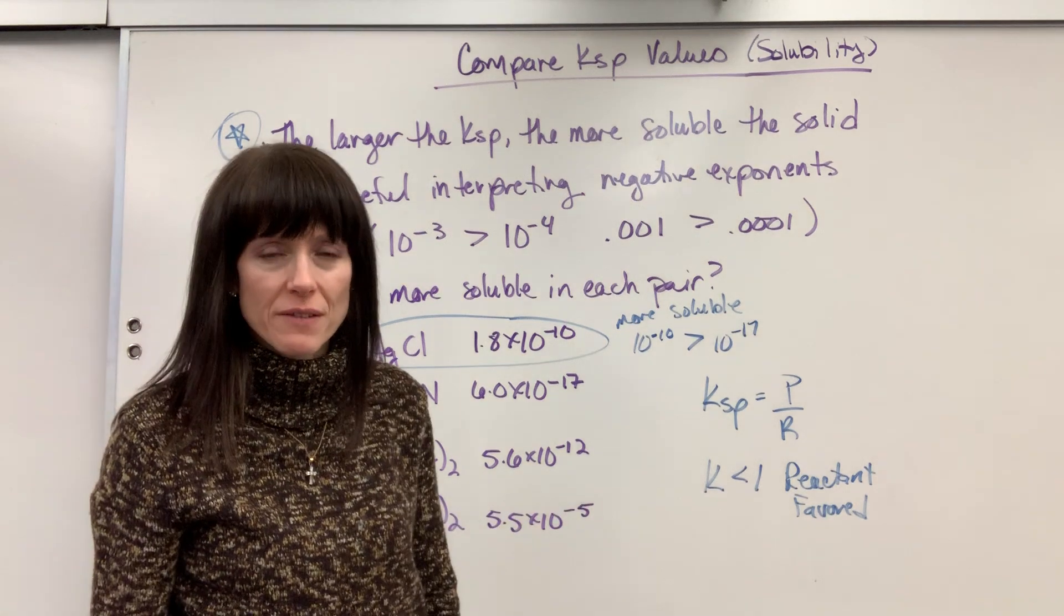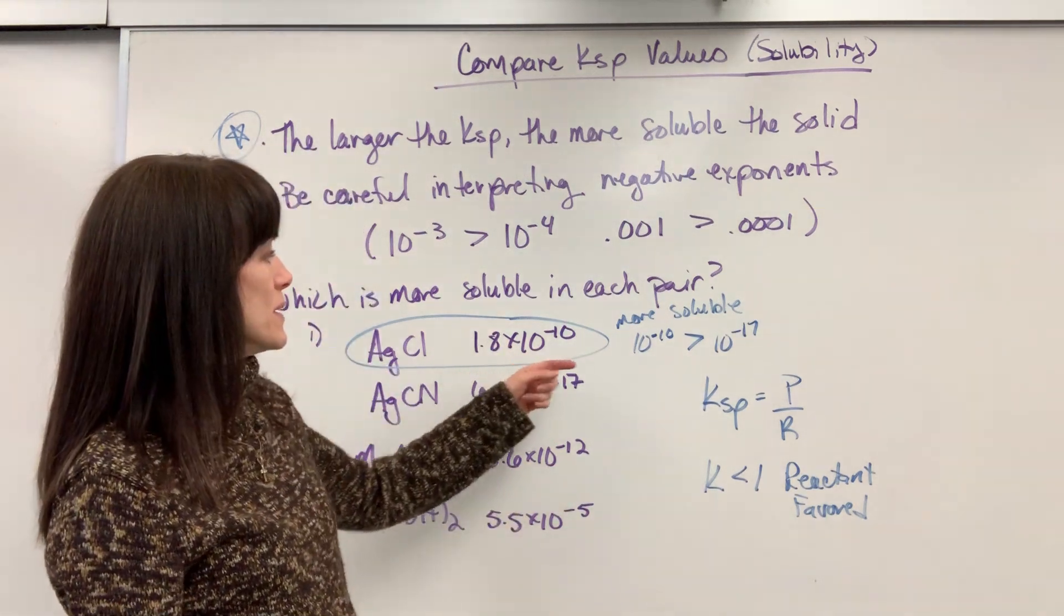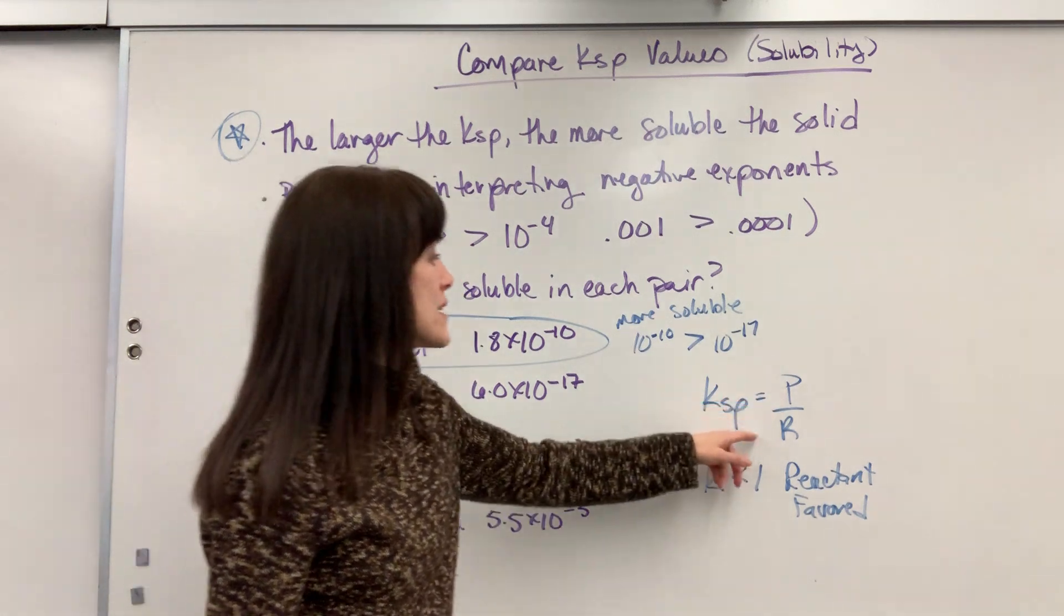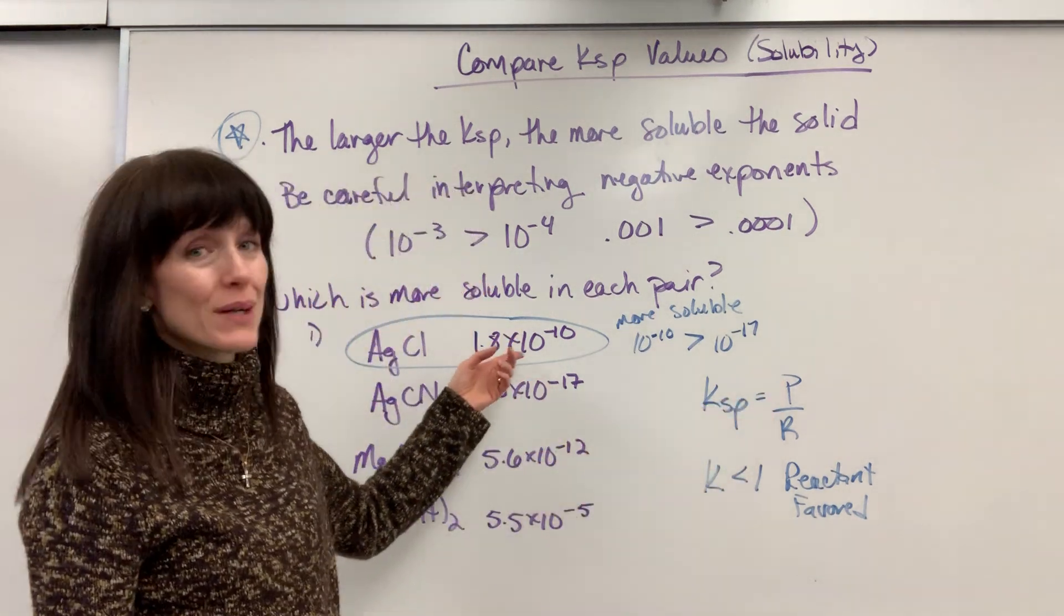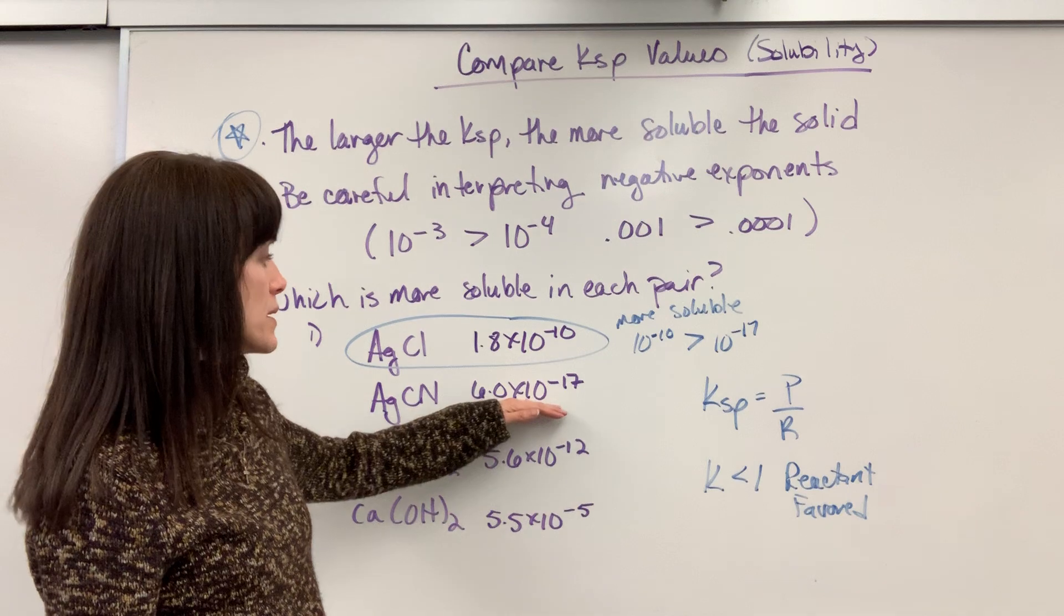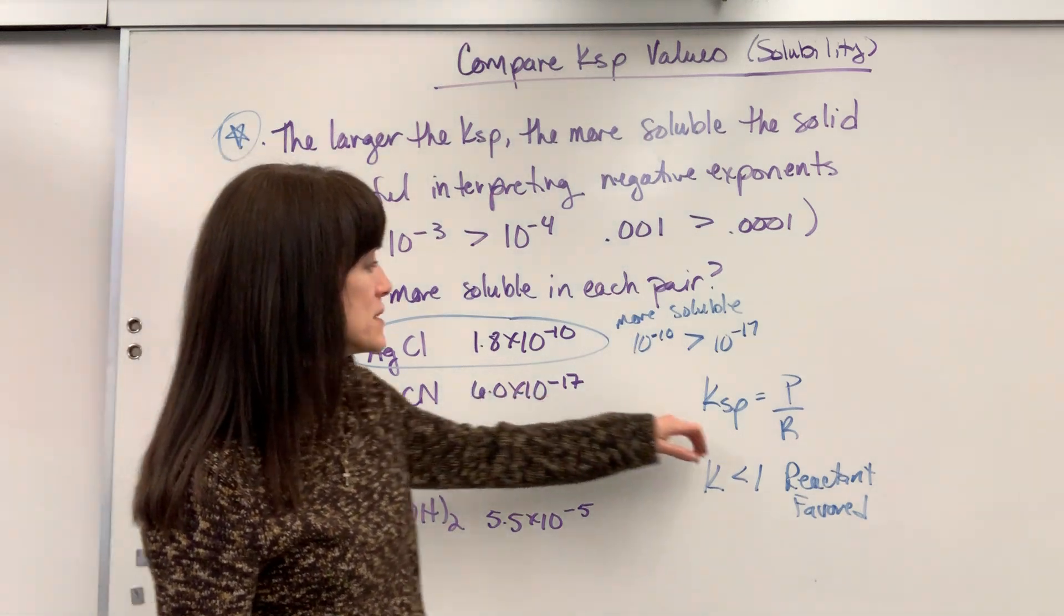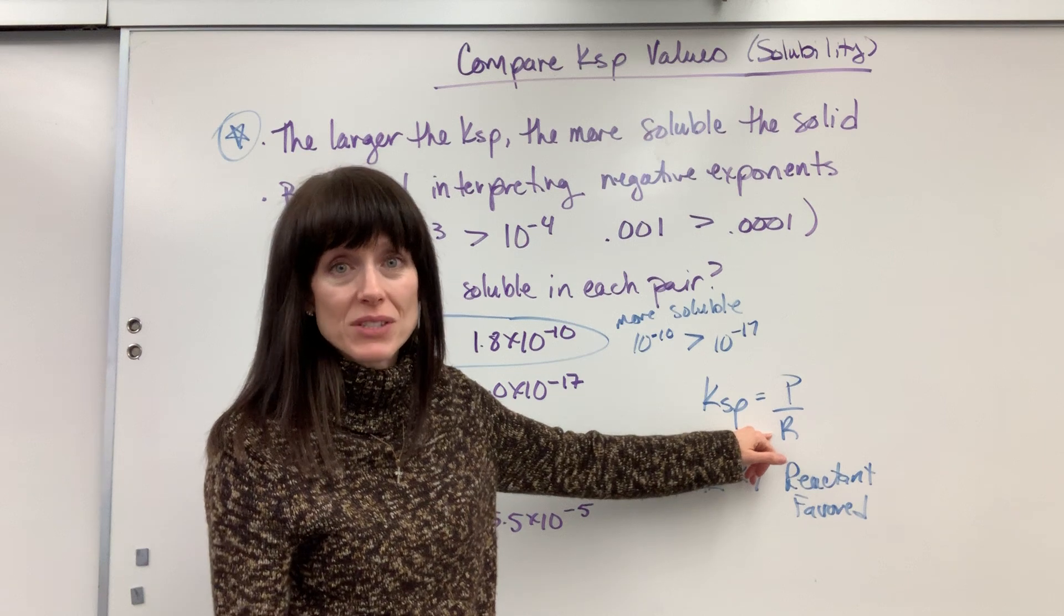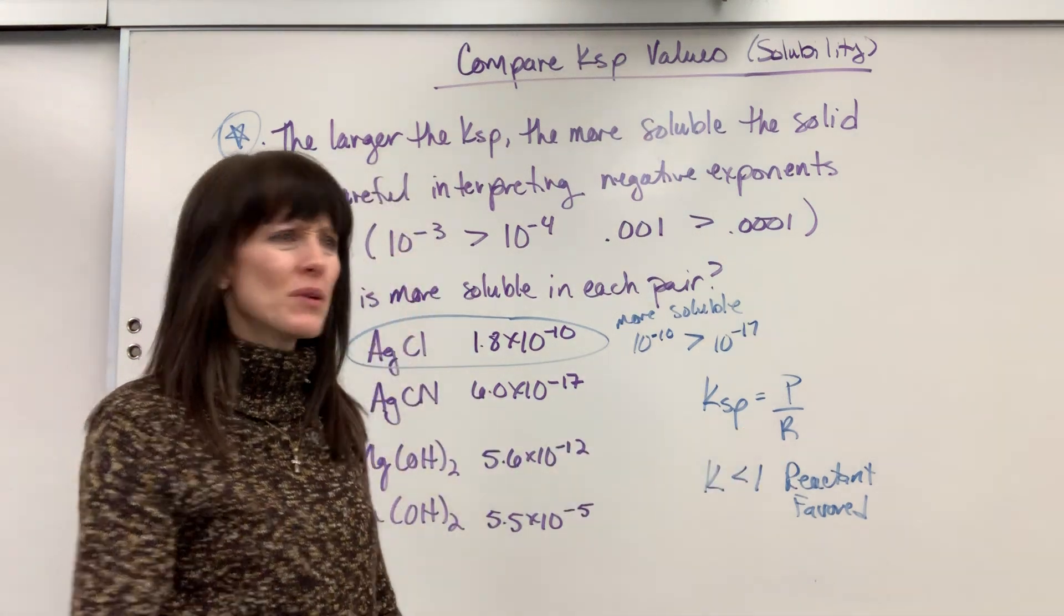So if I want to know, well, which one dissolves more, it's going to be the one that has actually more products. And the one that has more products is going to be the bigger number. Look at this one, 10 to the minus 17. That means I have a much larger reactant, and the reactant is a solid, which doesn't dissolve.